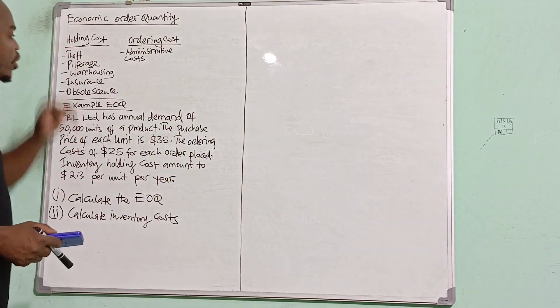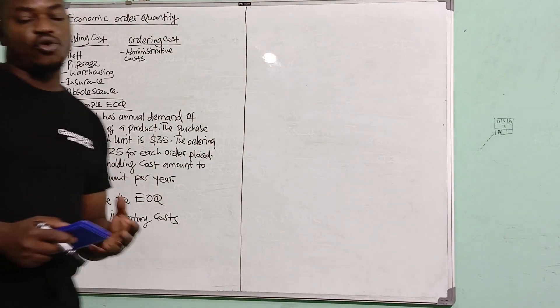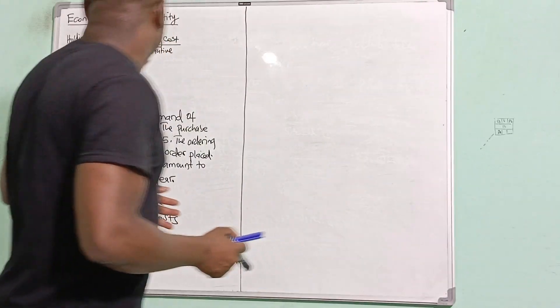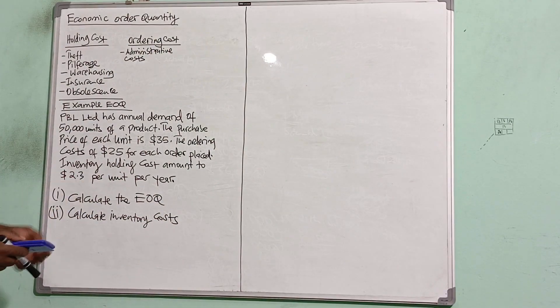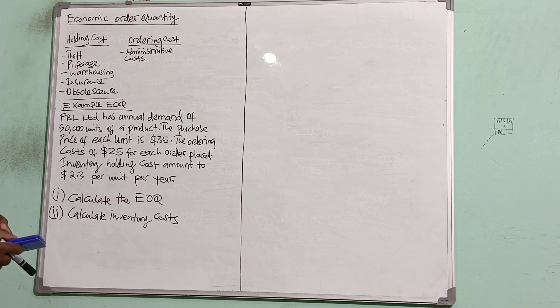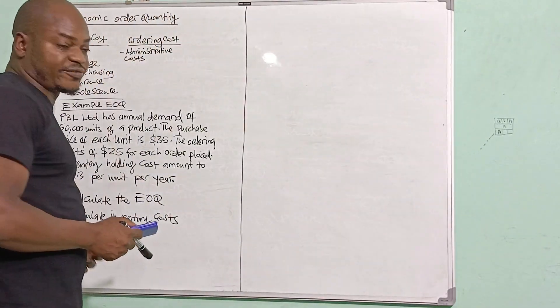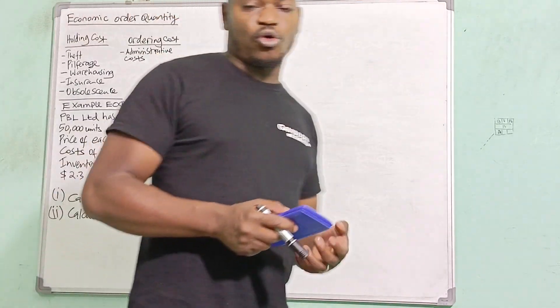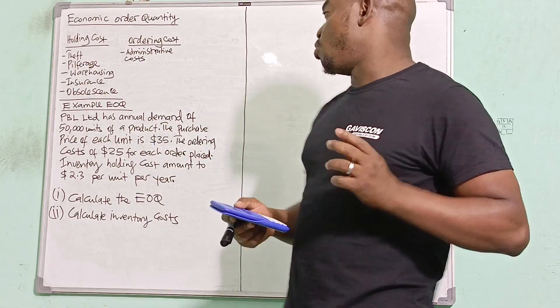Let me begin by talking about the holding costs. The holding cost is basically the cost of holding inventory, and it comprises the most prominent ones that are highlighted on the board here. Holding costs involve theft. Theft is a cost because we are holding inventory. It's a cost of holding inventory.